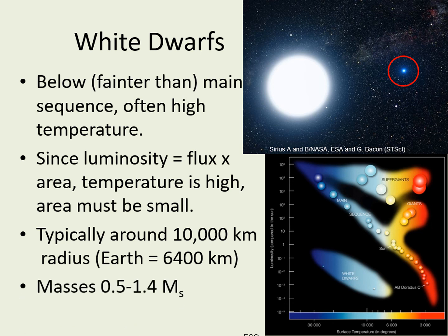Despite their small sizes, white dwarfs' masses are still stellar — typically between 0.5 and 1.4 solar masses. Once again, there isn't an obvious trend here, so you can't tell a white dwarf's mass from where it is on the HR diagram.